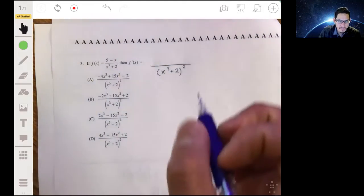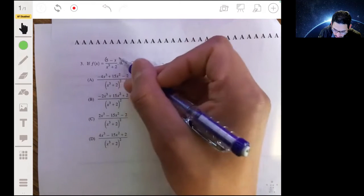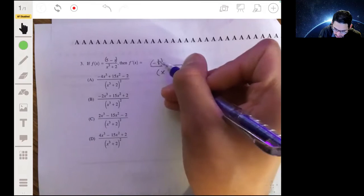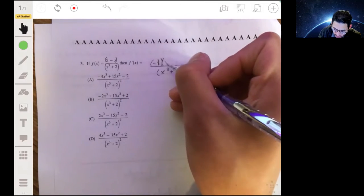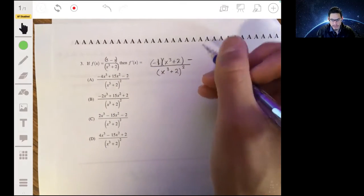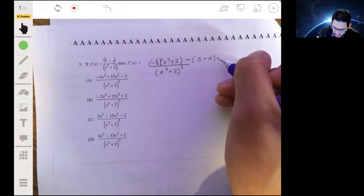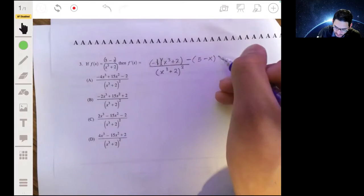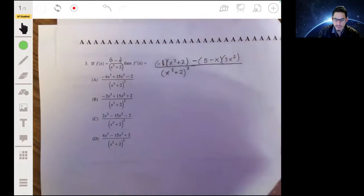And then we take the derivative of the top, which is going to be negative one, times the function in the bottom. So negative one times x cubed plus two, minus, then we keep the top function as is, minus five minus x, times the derivative of the denominator. So the derivative of the denominator will be 3x squared.